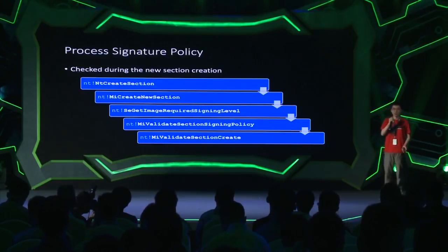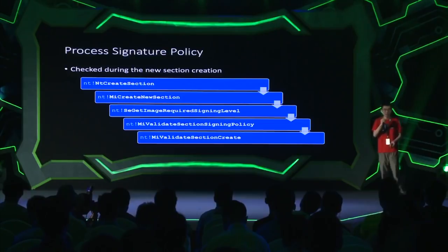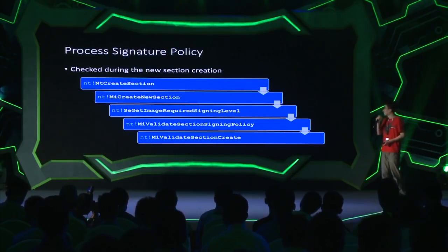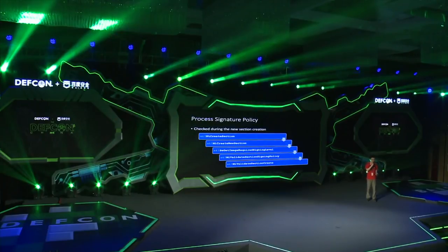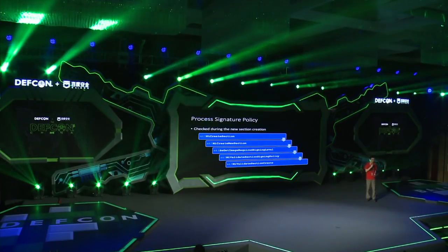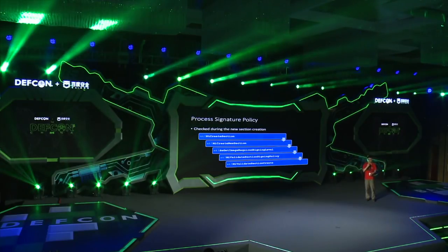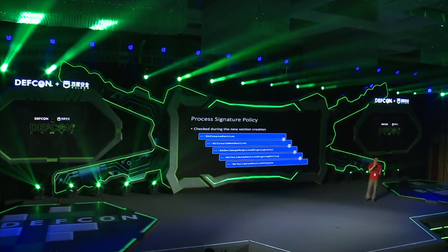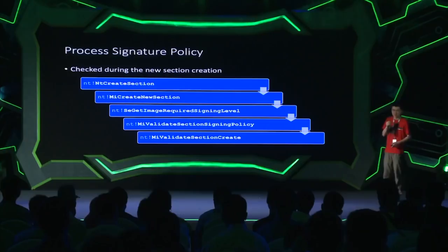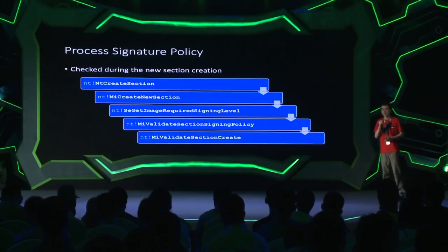An attacker can also choose to load a DLL into a compromised process. The process signature policy is checked during section creation. Whenever a DLL is loaded into a process, it first needs to create an image section. Before the section is created, the memory subsystem calls the code integrity subsystem to check if the executable DLL backing this section is digitally signed. If not, it prevents the section from being created.